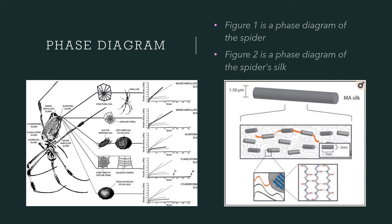These two figures represent phase diagrams. The figure on the left is a phase diagram of the spider, and the figure on the right represents the phase diagram of the spider silk.